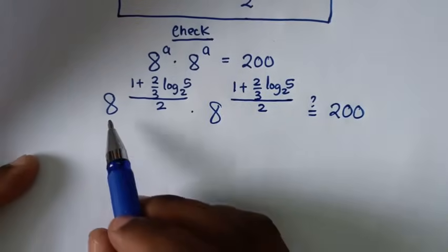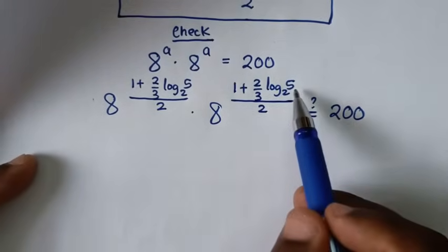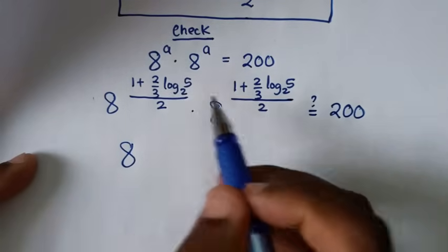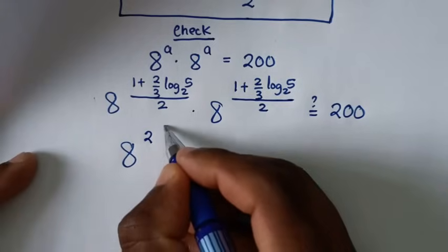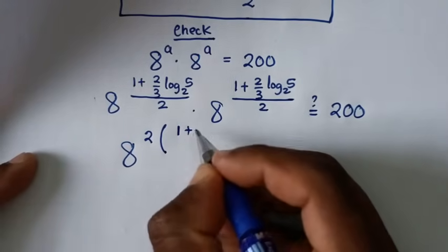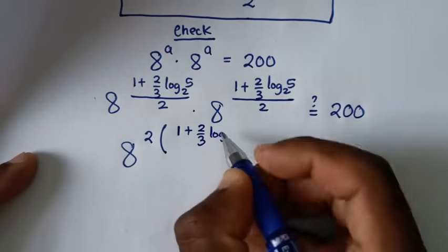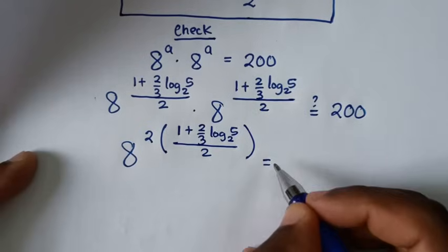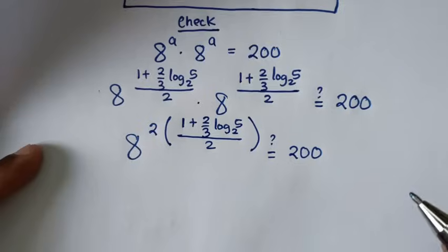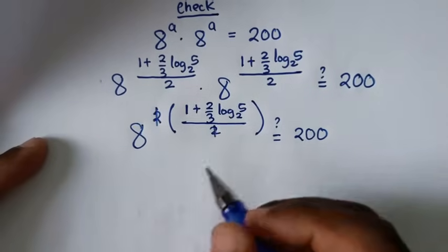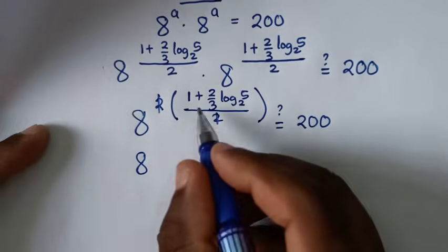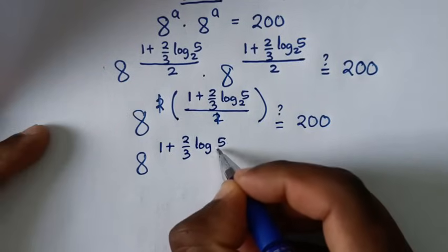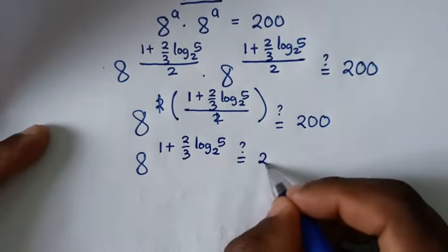From this times this — both factors are the same — so it will be the same base of 8, and the exponents add. So it will be 8 power 2 times the bracket 1 plus 2 over 3 log base 2 of 5 over 2, is it equal to 200? To simplify, it will be 8 power of 1 plus 2 over 3 log base 2 of 5, is it equal to 200?